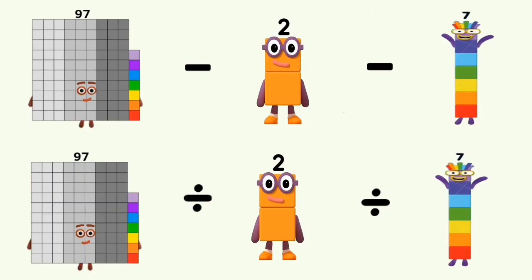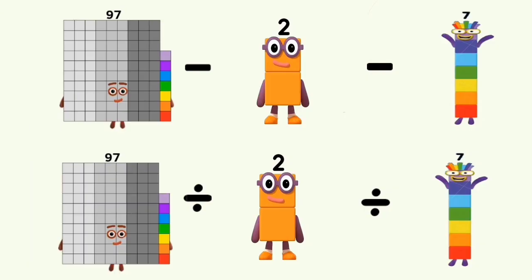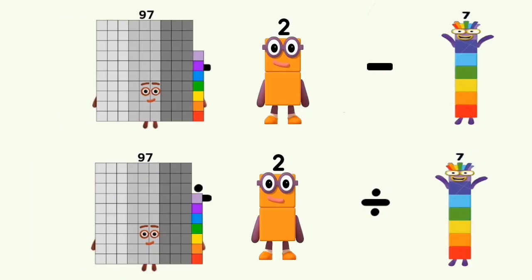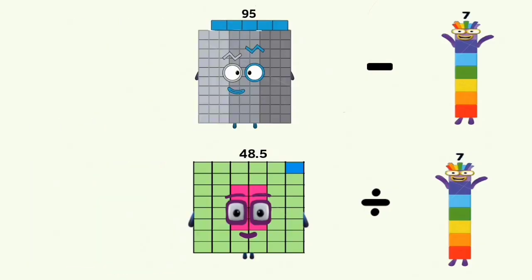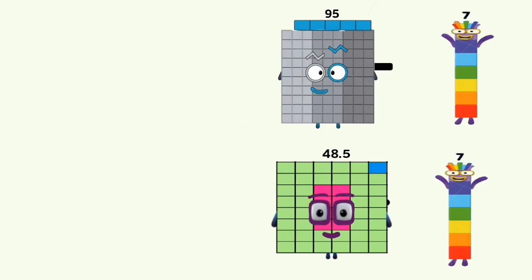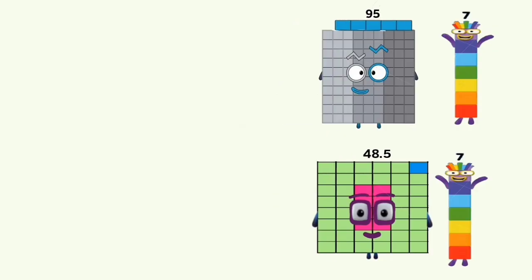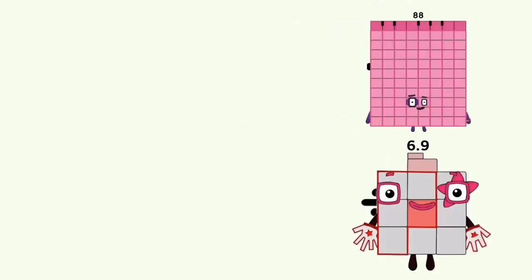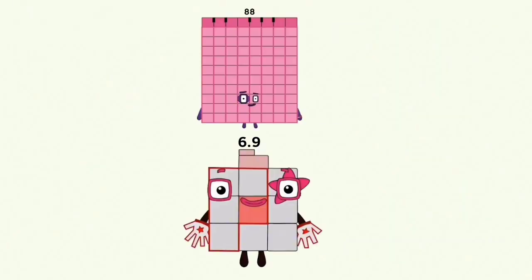97 minus and divided by 2 equals 95 and 48.5. 95 minus 7 and 48.5 divided by 7 equals 88 and 6.9.